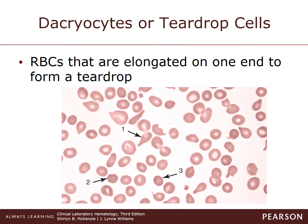Dacryocytes, as seen in image 1, are red cells that have an elongation at one end to form teardrop or pear-shaped cells. This morphology can form after erythrocytes containing cellular inclusions have traveled through the spleen, or are trapped within the bone marrow, and the cell cannot return to its original shape.